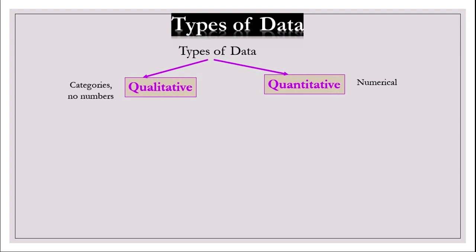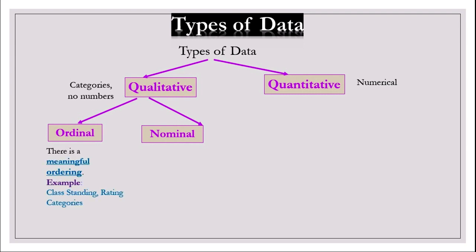The qualitative data can also be classified into ordinal and nominal. What's the difference between them? For ordinal data, there is a meaningful ordering. For example, class standing, rating categories. For nominal data, there is no meaningful ordering. One category is not better than another. For example, gender, or the states in the US, and color.